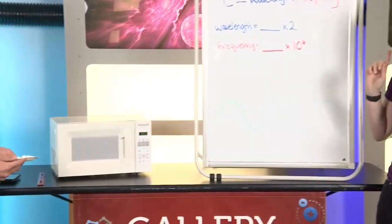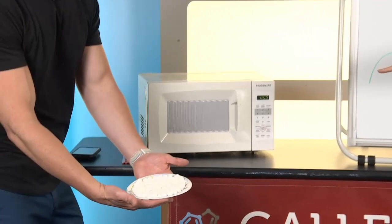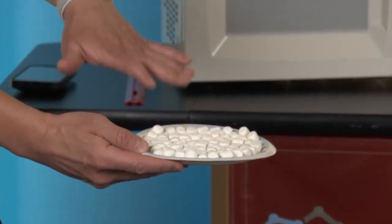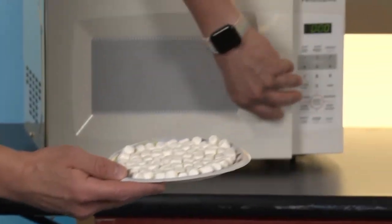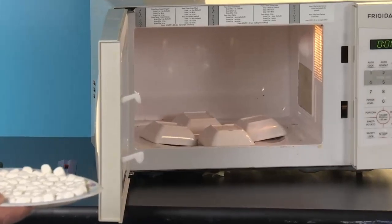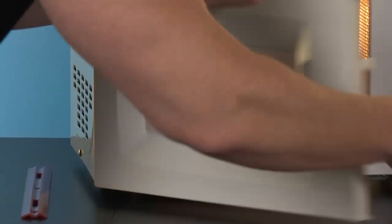All right. So we're going to use those marshmallows to figure out where those hot spots in our wave is. Room temperature, miniature marshmallows, plate full of them. Flat, level. And we have those little ramekins because we don't want it to spin. Go right on top. Perfect.